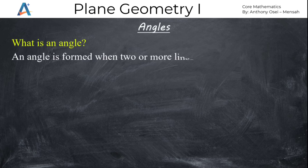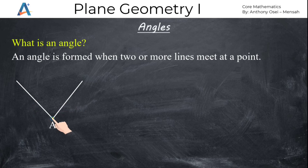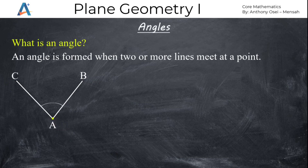An angle is formed when two or more lines meet at a point. If you have a line and another line joining this way, when they meet at this point — let me call this point A — this line is meeting this line at point A. I'll call this AB and I'll call this AC. So line AC and line AB are meeting at A. Once they meet, an angle is formed here. So an angle is formed when two or more lines meet at a point.